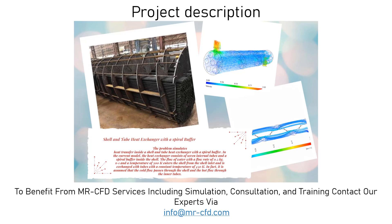In the current model, the heat exchanger consists of several internal tubes and a spiral baffle inside the shell. Water with a flow rate of 0.5 kg/s and a temperature of 300 K enters the shell from the shell inlet and exchanges heat with the tubes at a constant temperature of 450 K. The cold flow passes through the shell and the hot flow through the inner tubes. For simplicity, the model assumes that the hot fluid flowing through the tubes maintains a constant temperature of 450 K.